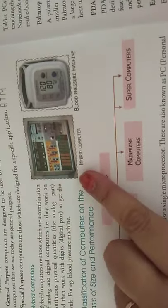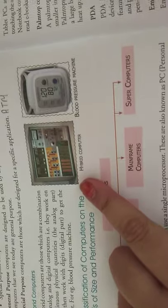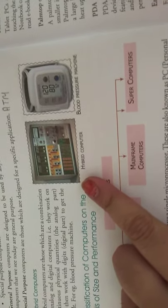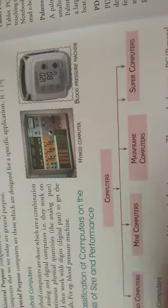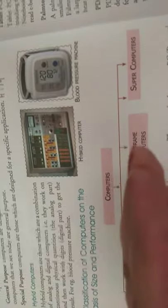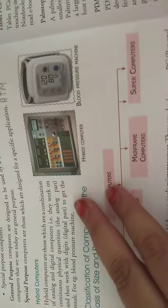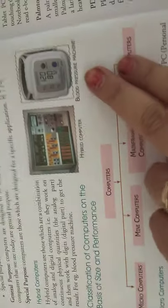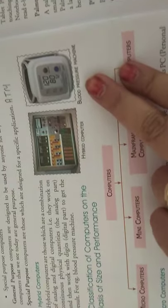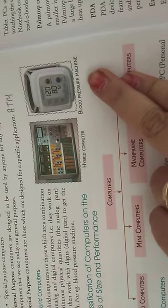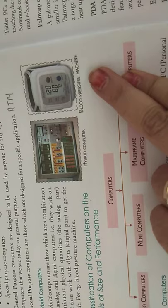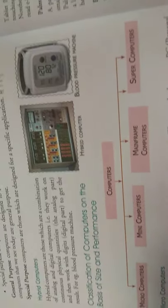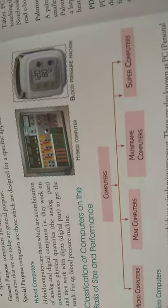For example, blood pressure machine. Kisi ke ghar mein blood pressure machine hogi BP check karne ki. Kabhi bhi ham notice kare hain ki blood pressure machine mein digits aate hain aur continuously chalati rehti hai. Toh yeh kya kehlayenge? Hybrid computers.